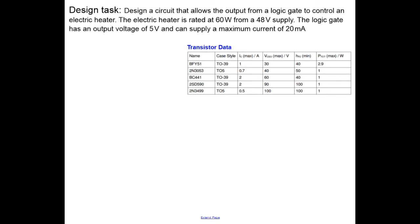Here is quite a standard problem with lots of information in the question. It's a design task. We want a circuit that's going to allow us to control an output from a logic gate, so we're going to use a transistor. We're going to be controlling an electric heater, which will be relevant at the end. It's 60 watts and it uses a 48 volt supply. The logic gate has an output of only 5 volts and can supply a maximum of 20 milliamps. So as usual, we've identified all the information in our question.